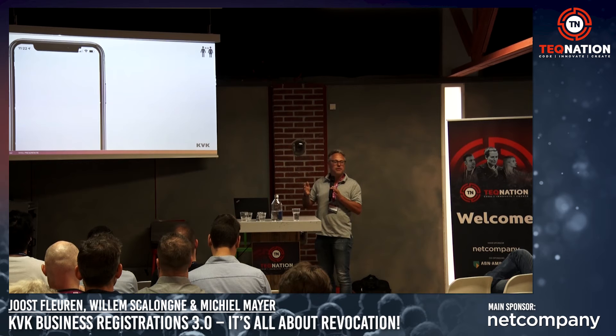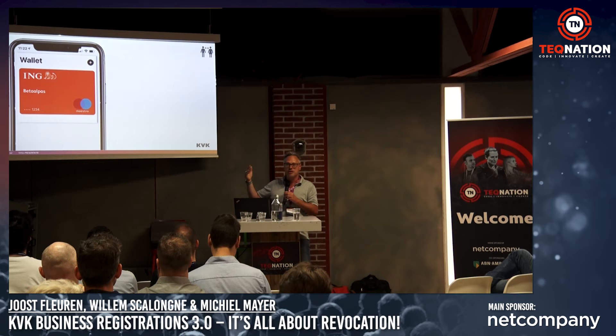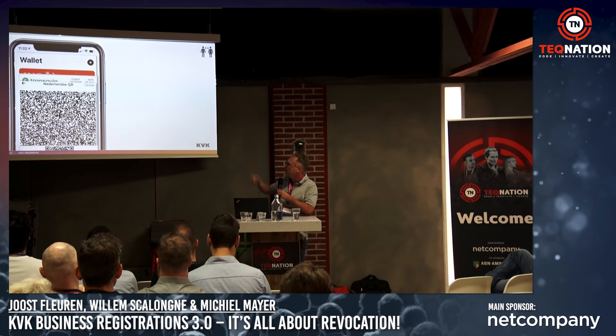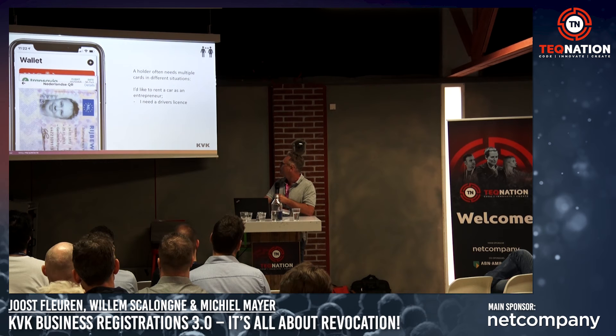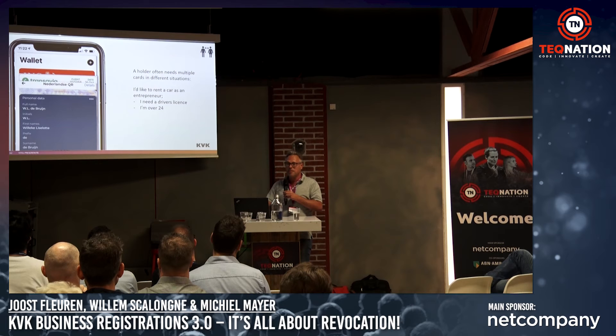Most of you are probably familiar with the concept of a wallet — we're already accustomed to having a debit or credit card in them. You can have your flight tickets in it, you can prove that you're old enough to drink a beer in a bar. And sometimes in more complex situations where you need a trade register, you need information from more than one card. If you want to rent a car as an entrepreneur, you need a driver's license, you need to prove you're over 24, and you need to prove that you actually run a business so you can ask for an invoice.